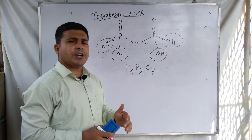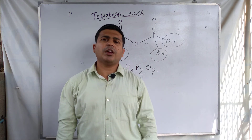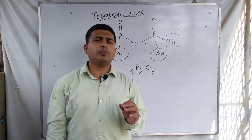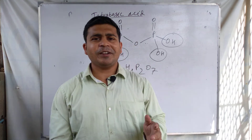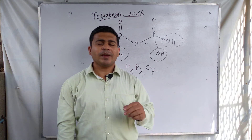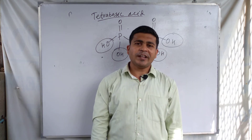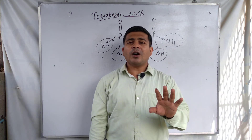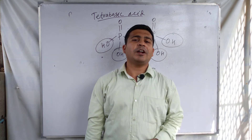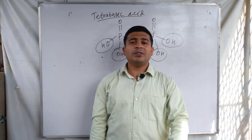This completes the overall discussion of monobasic acid, dibasic acid, tribasic acid, tetrabasic acid, and basicity of the acid. One important point to note: the number of hydrogen atoms present in an acid does not indicate the basicity of the acid. Basicity depends on the number of ionizable hydrogen atoms present in the acid — not the total number of hydrogen atoms. The number of ionizable hydrogen atoms is the important factor for basicity.